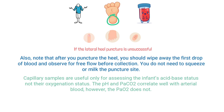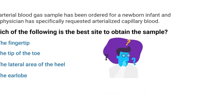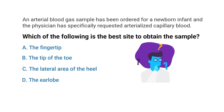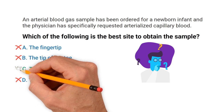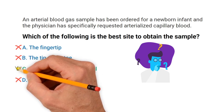By using what we know about capillary blood sampling in infants as well as the process of elimination, we can determine that the correct answer is C — the lateral area of the heel.